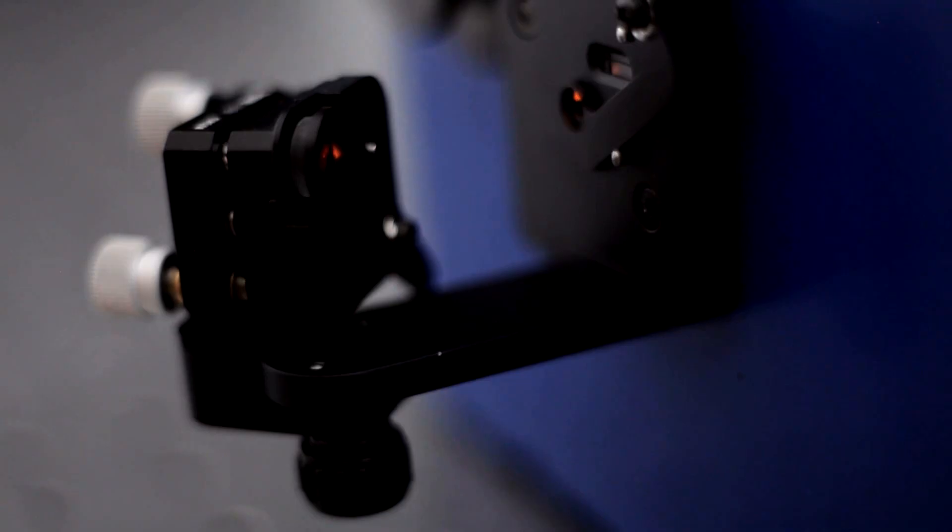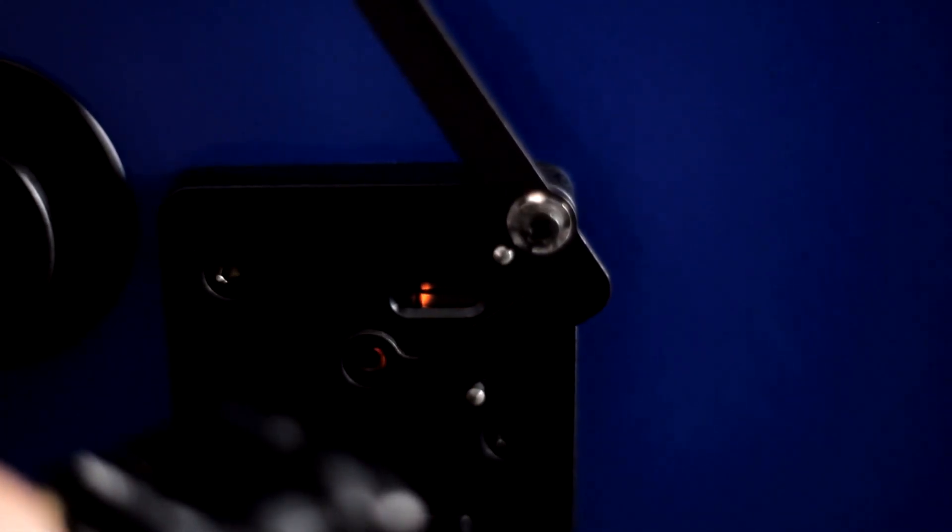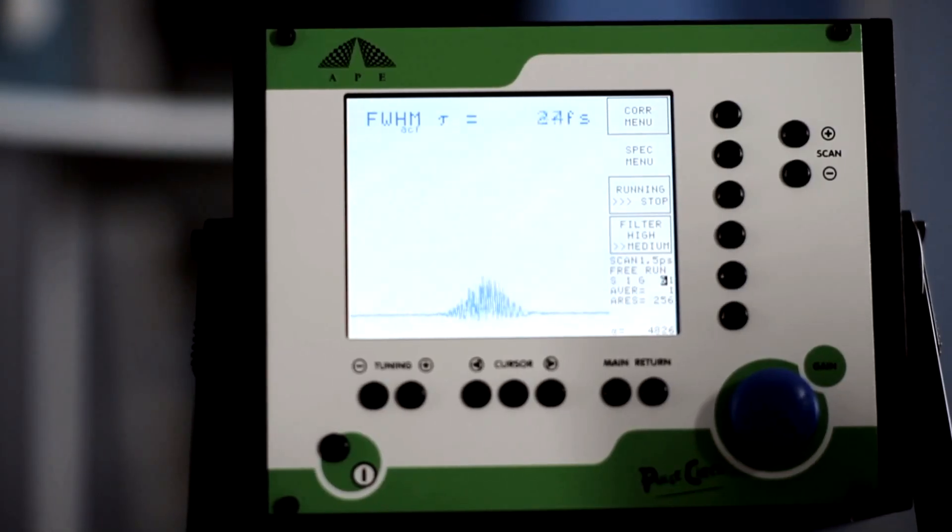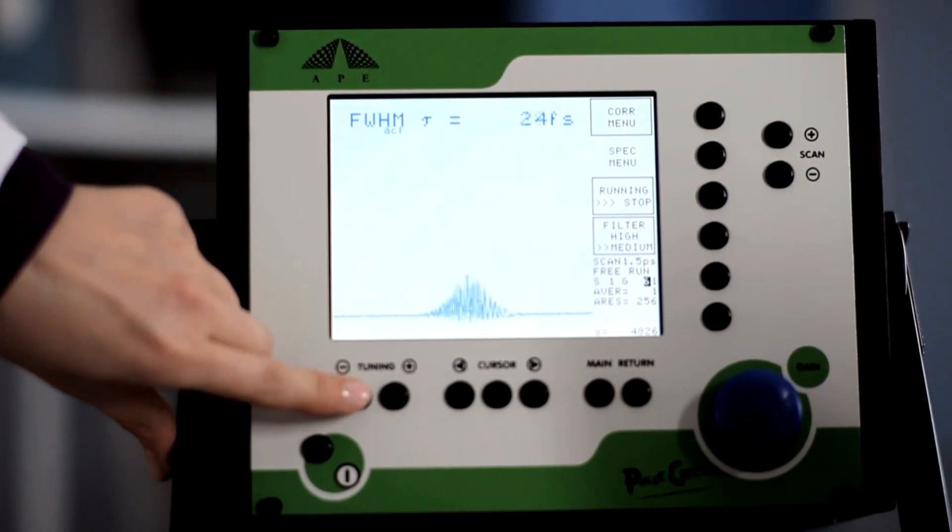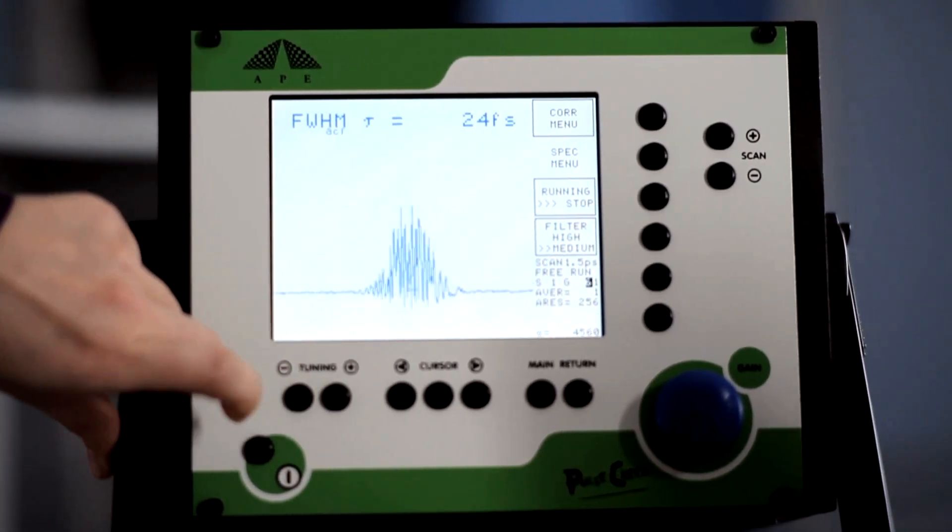Now you can direct the beam to the input aperture, by turning the input mirror screws in the appropriate direction. Once the beam is in the center of the crosshair, check the controller screen to see if you have a signal. If there is no signal, or if it's weak, press the tuning buttons to adjust the crystal angle.